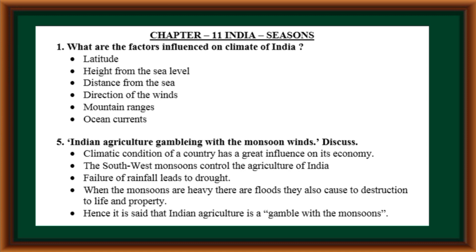Indian agriculture — gambling with the monsoon winds. Climatic conditions of a country have a great influence on its economy. The southwest monsoons control the agriculture of India. Failure of rainfall leads to drought, but when the monsoons are heavy, there are floods which also cause destruction to life and property. Hence, it is said that Indian agriculture is a gamble with the monsoon.